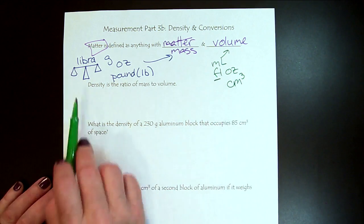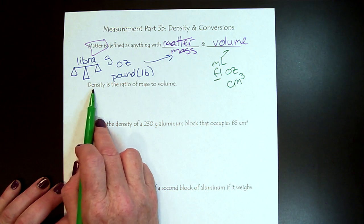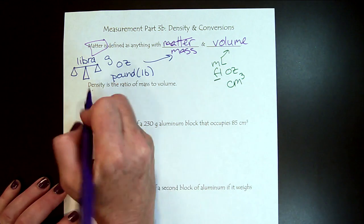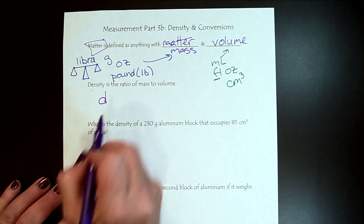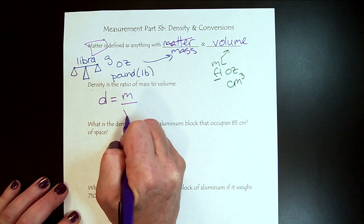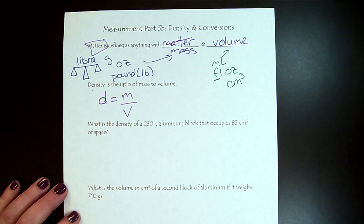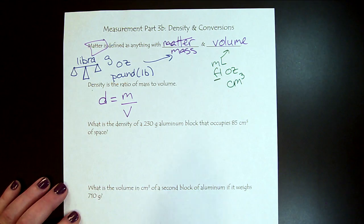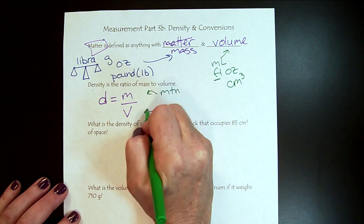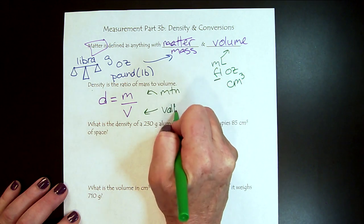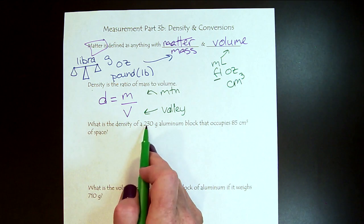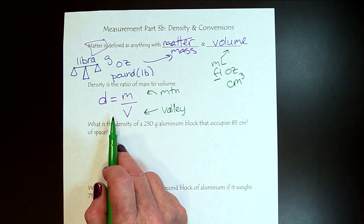So here is the definition of density in English. Density is the ratio of mass to volume, so let's translate that into mathematics. So D for density equals mass over volume. And to keep that straight, when I was learning it, I thought about M is like mountains, mountains go up high, and V, valley, valley down low. So the mass is on top because mountains are up high, and the volume is low because valleys are low.